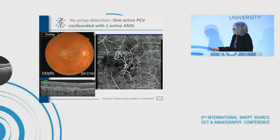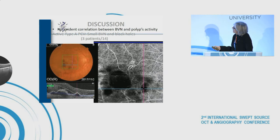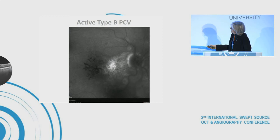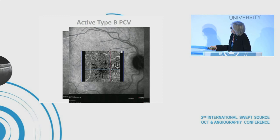There was no evident correlation between the branching vascular network and polyp activity. Here is a Type A PCV with a very small branching vascular network and polyps represented as black holes. Here is an example of active Type B PCV — active with no leakage on fluorescein angiogram late phase, showing two polyps. We can see a loose branching vascular network with an extrusion from the branching, feeder vessels ending with polyps.